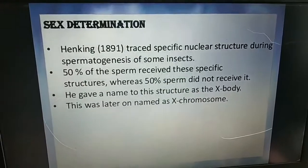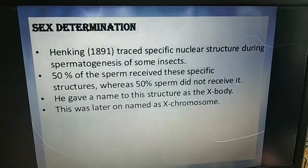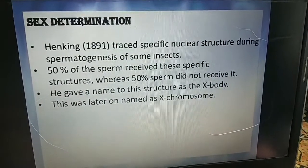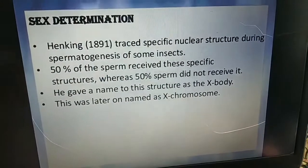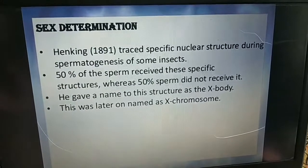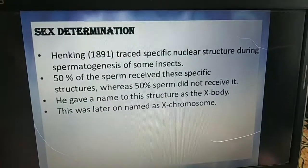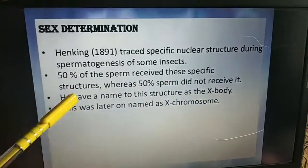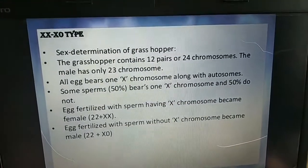Scientist Henking, in the year 1891, observed a specific nuclear structure during the spermatogenesis of some insects. 50 percent of the sperm received this specific structure whereas 50 percent did not. He gave a name to this structure as the X-body, which was later named the X chromosome.